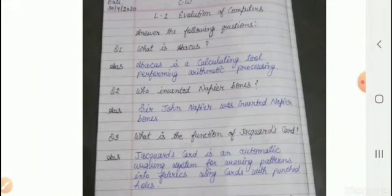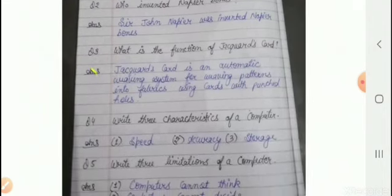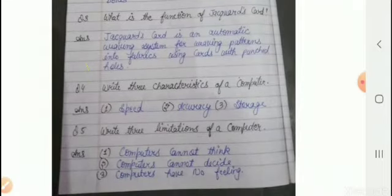What is Abacus? Abacus is a calculating tool performing arithmetic process. Who invented Napier's bones? Sir John Napier invented Napier's bones. What is the function of Jacquard's card? Jacquard's card is an automatic weaving system for weaving patterns in fabrics using cards with punched holes. It was a weaving machine. Write three characteristics of a computer: speed, accuracy, and storage. Power limitations: computers cannot think, they cannot decide and have no feelings. So that was all your question answers and exercise.